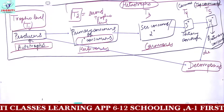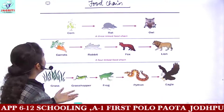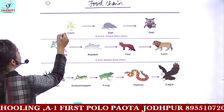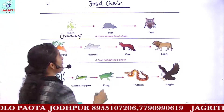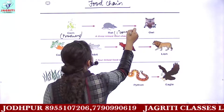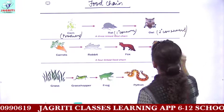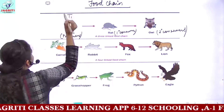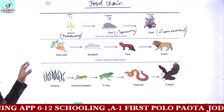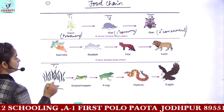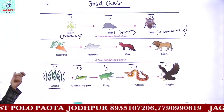Let's look at some examples of food chains. In the first example, corn is the producer. Rat eats the corn, so rat is the primary consumer. Owl eats the rat, so owl is the secondary consumer. Corn is at the first trophic level, rat is at the second trophic level, and owl occupies the third trophic level. In the second example, grass is at the first level, grasshopper at the second, frog at the third, python at the fourth, and eagle at the fifth trophic level.